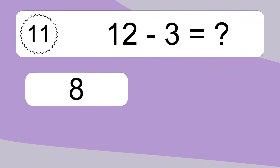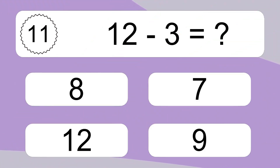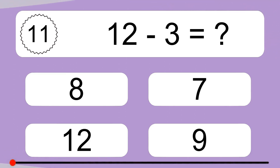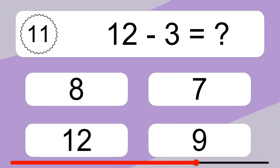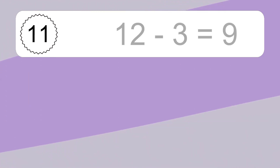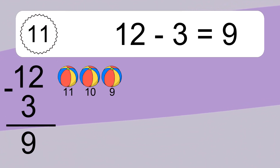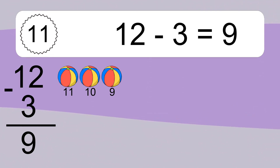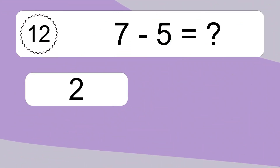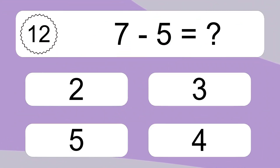12 minus 3 equals what? 12 minus 3 equals 9. Let's count it: 11, 10, 9.